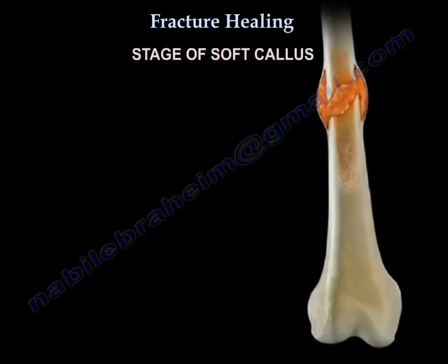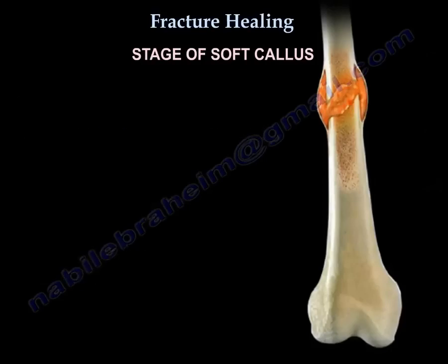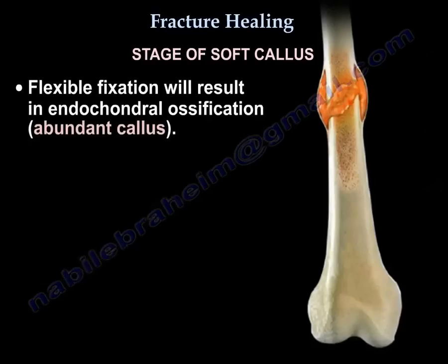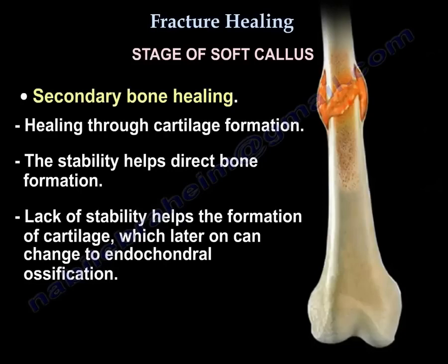The stage of soft callus occurs within two weeks. The amount of callus correlates with immobilization — the stiffer the immobilization, the less the amount of callus. Flexible fixation will result in endochondral ossification and abundant callus, which is secondary bone healing — healing through cartilage formation. Lack of stability promotes cartilage formation, which can later undergo endochondral ossification.